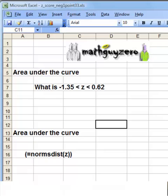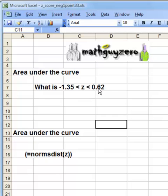Excel to find the area under a Z curve between negative 1.35 and 0.62. What you got to do is click a cell, any cell, go up to the F of X bar.